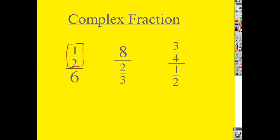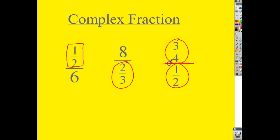Take a look at the second one. This one is eight divided into two-thirds, so two-thirds together is actually the denominator. And then the third one is a really complex fraction: I have three-fourths and I'm dividing it into groups of one-half. This is the big division symbol here — taking three-fourths and dividing it into half.